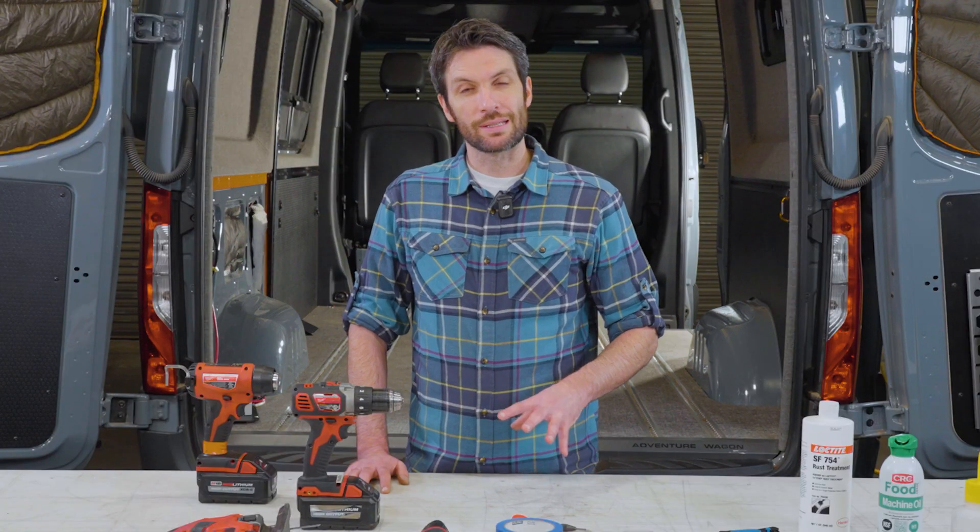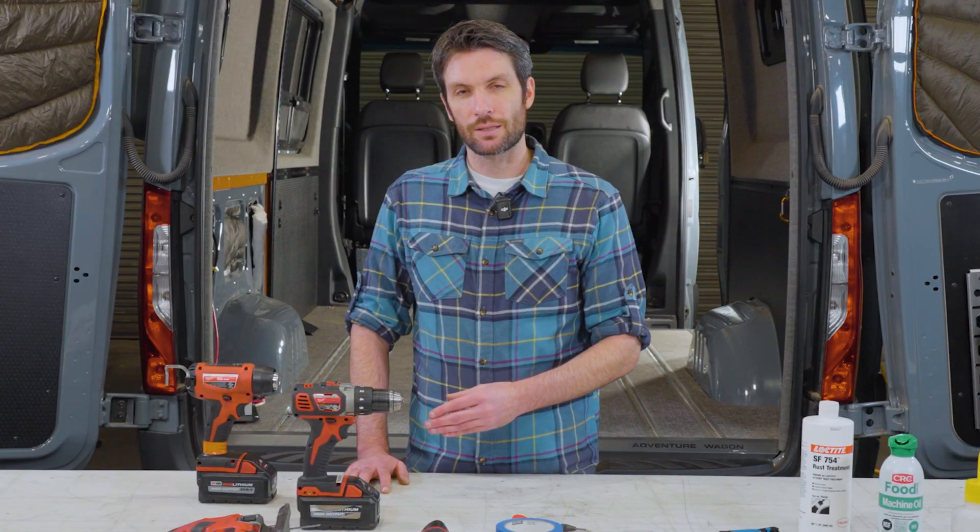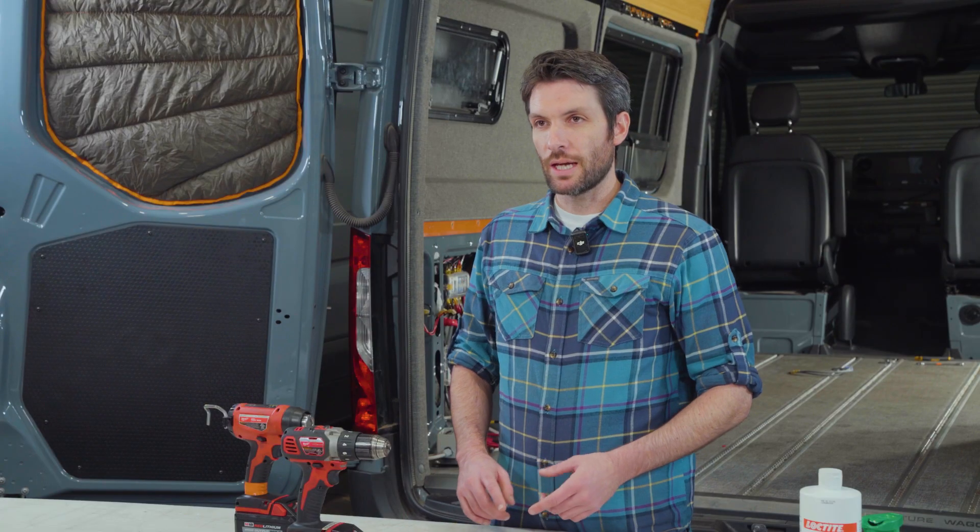Keep in mind that there is no real assembly to this kit, it goes straight into the installation into the van. So this is going to take you through the installation of the solar wiring gland in the roof, the routing of the wires inside the van, and then the final connections to the battery system in the back of the van.